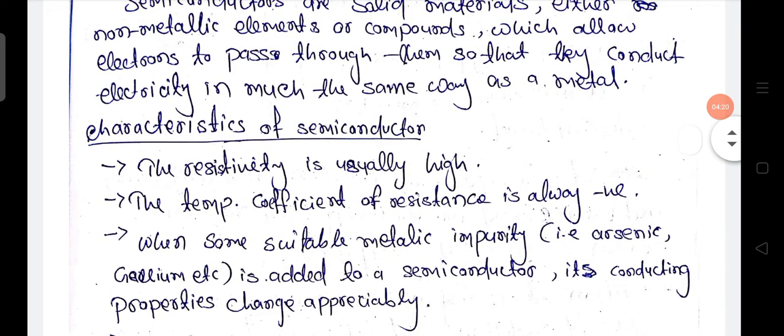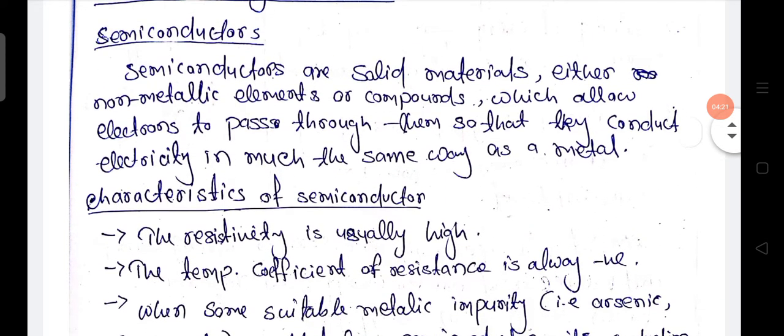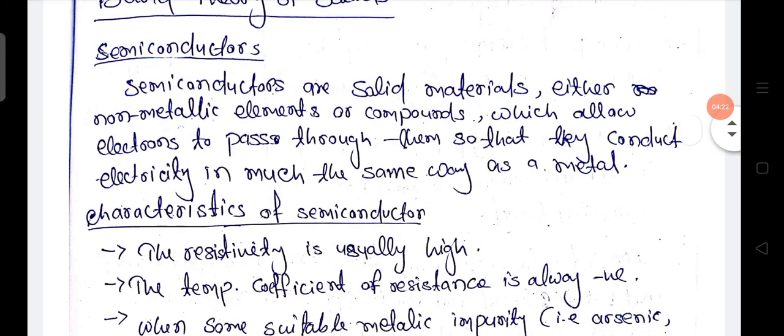The popular examples of semiconductors are silicon and germanium.